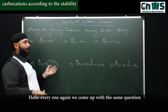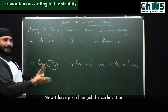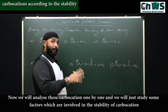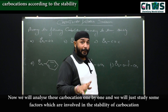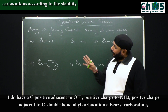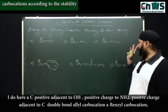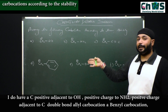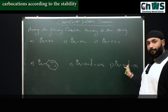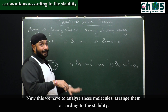Hello everyone. We come up with the same question — we have to arrange the carbocations according to stability. The carbocations have been changed and we will analyze them one by one, studying some factors involved in carbocation stability: positive charge adjacent to OH, adjacent to NH2, adjacent to C=C (allyl carbocation), benzyl carbocation, and positive charge adjacent to oxygen with other groups attached.